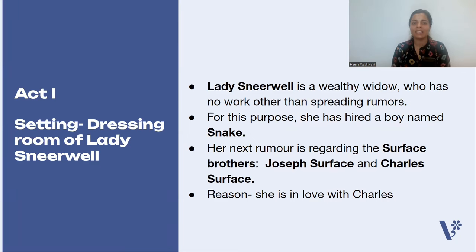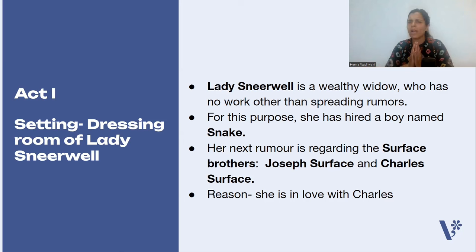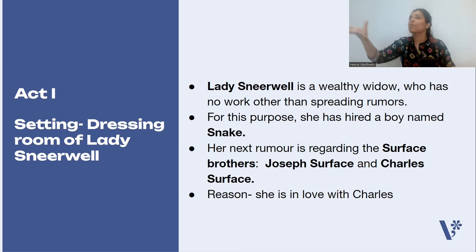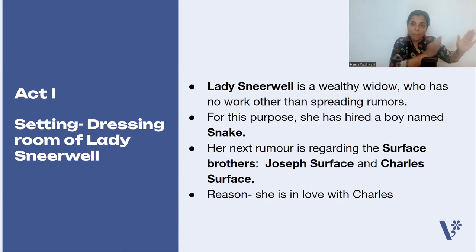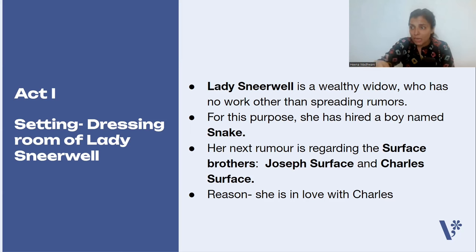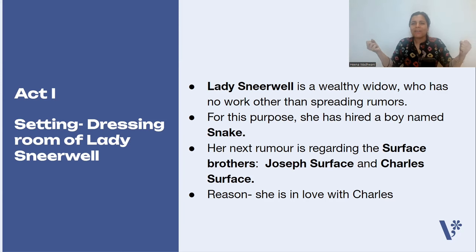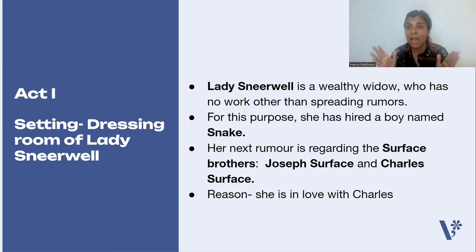Let's start with Act 1. The setting is the dressing room of Lady Sneerwell. Lady Sneerwell is a gossip monger — a young, wealthy widow who has no work in life other than spreading rumors. She even sends forged letters and pays money to write false columns in the papers. Lady Sneerwell is a personality who loves to make people fight and spread rumors, and her rumors spread like wildfire.